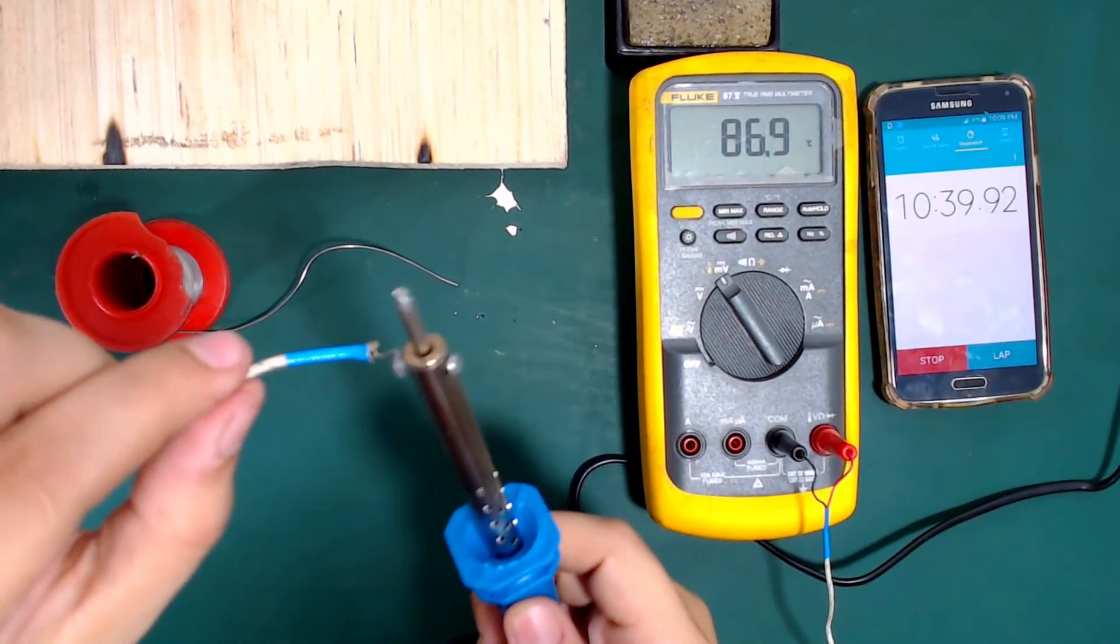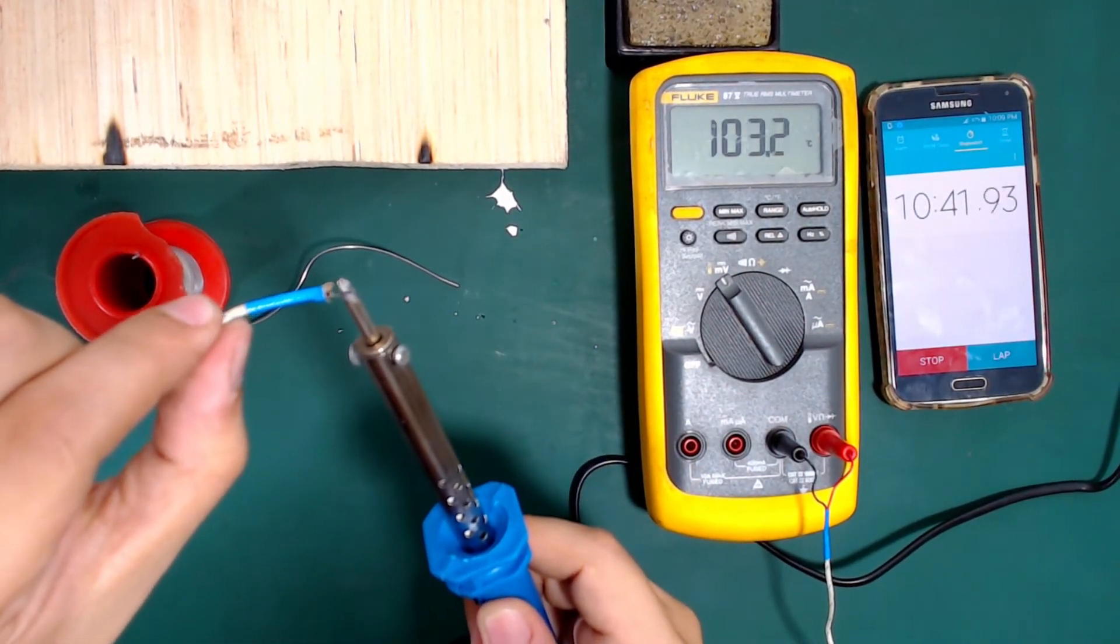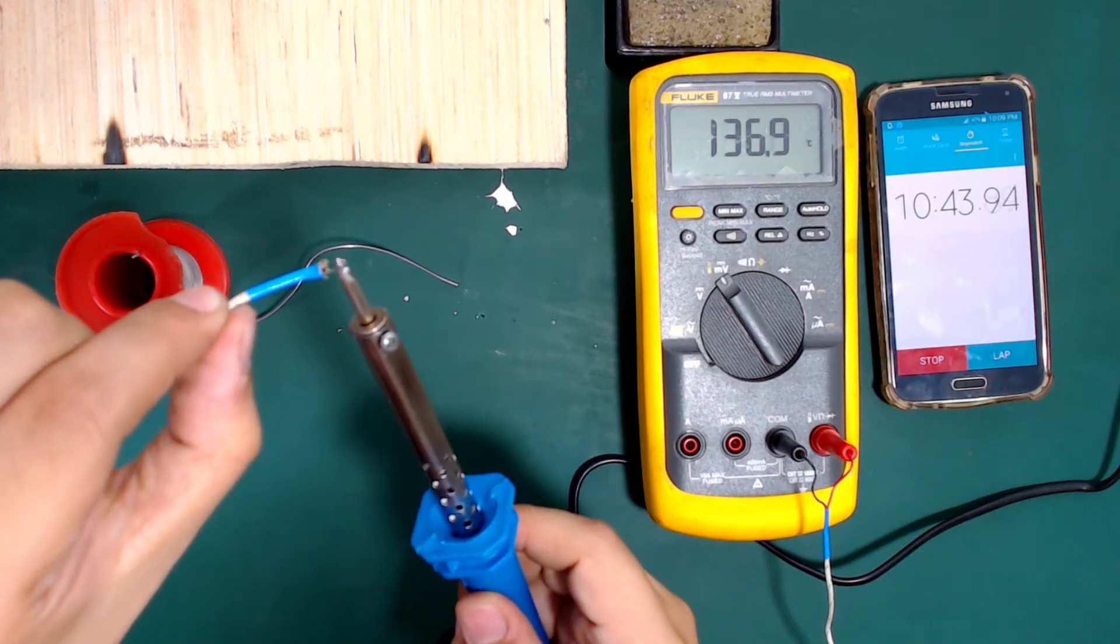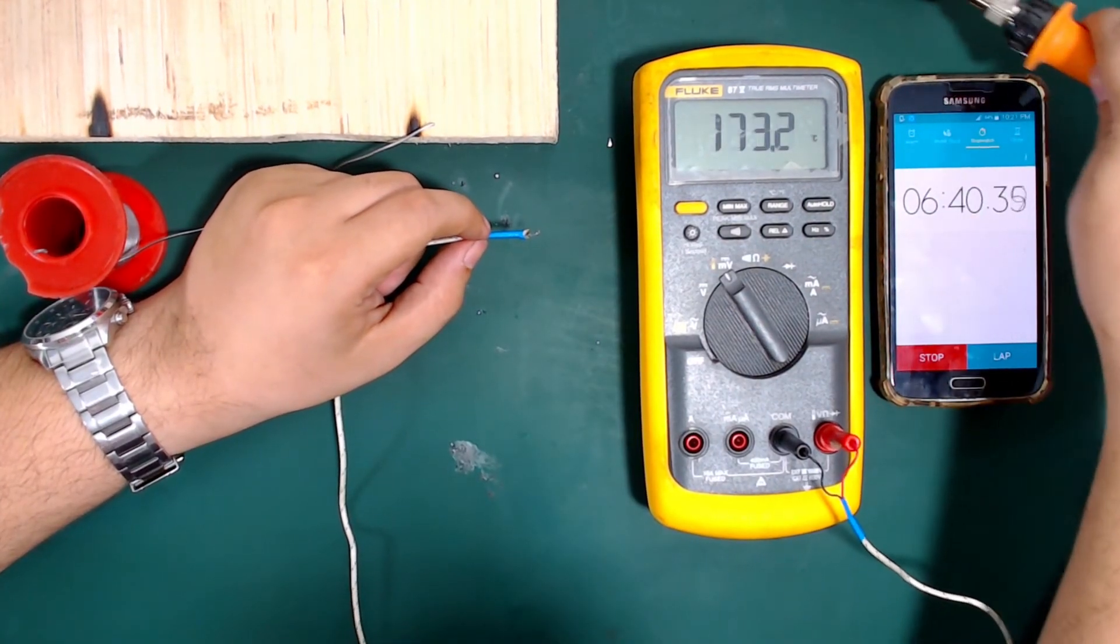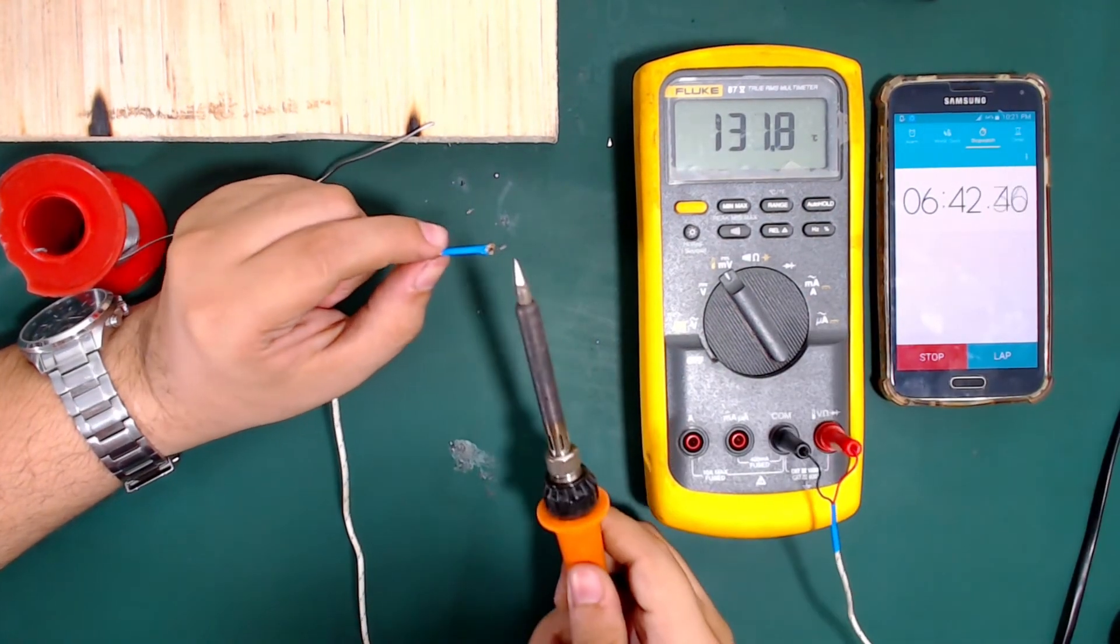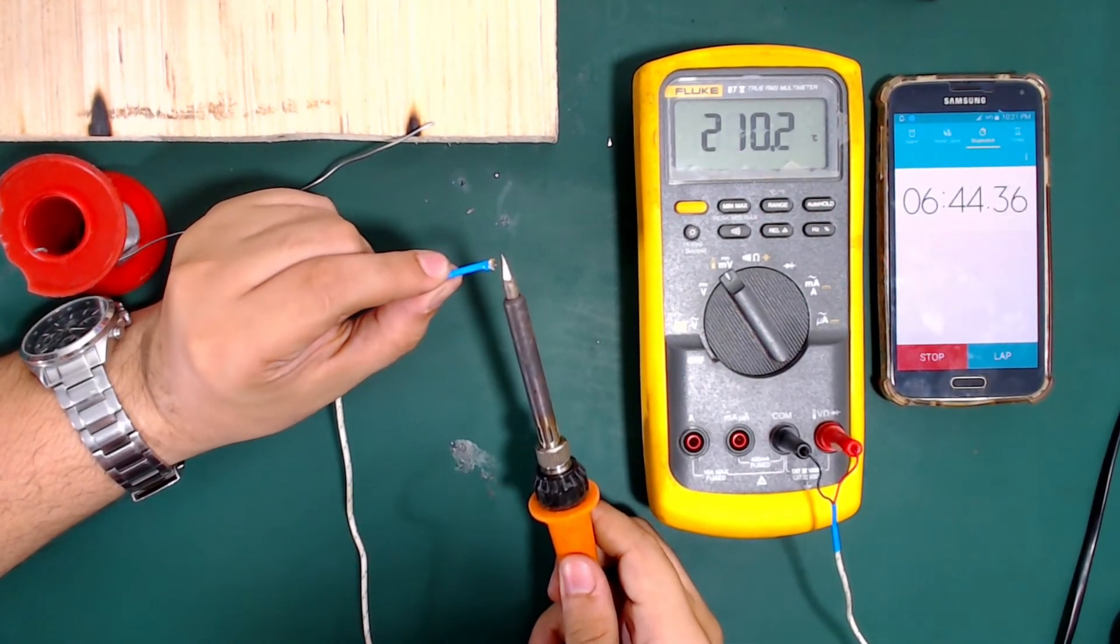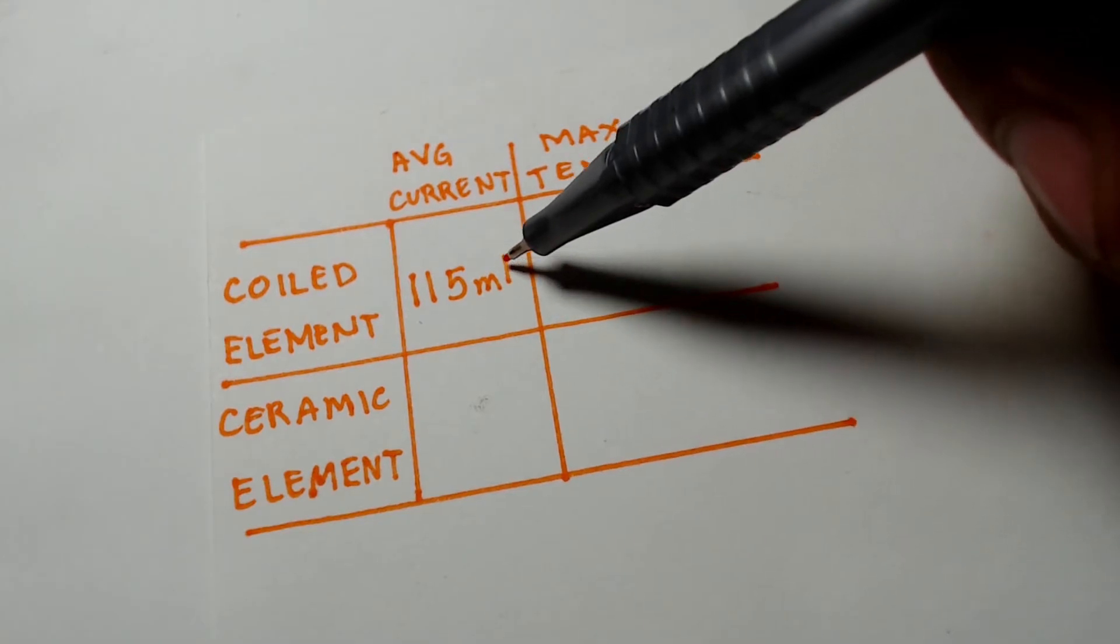Finally, for the recovery time, after each of them reached their maximum temperature, I wiped the tip with a wet sponge and measured the temperature again, in which the ceramic type had a faster melting capability than the coil type had.